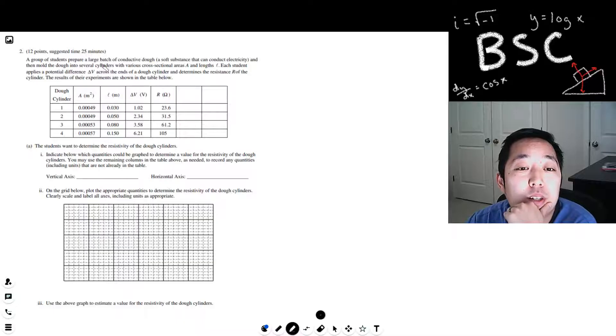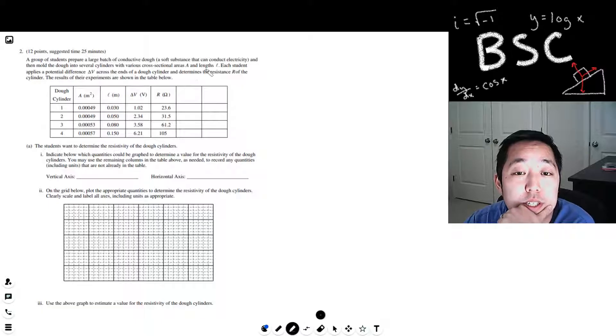A group of students prepare a large batch of conductive dough and then mold the dough into several cylinders with various cross-sectional areas A and lengths L. Each student applies a potential difference across the ends of the dough cylinder and determines the resistance of the cylinder. Results of the experiments are here.